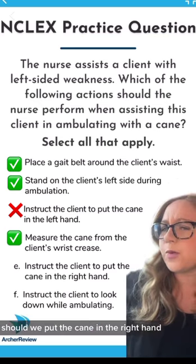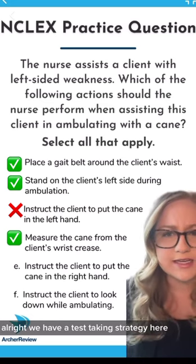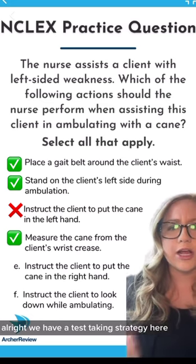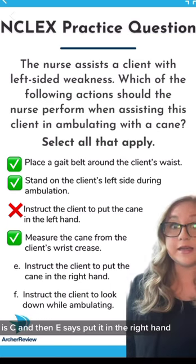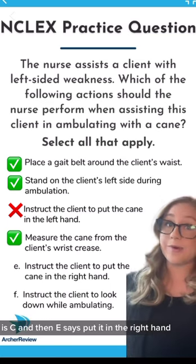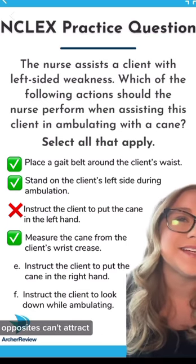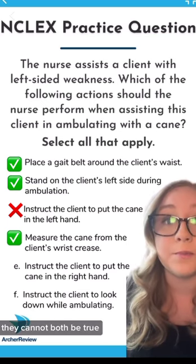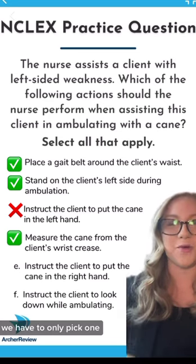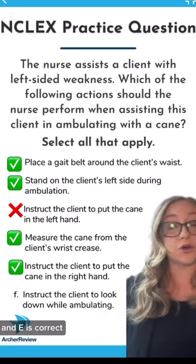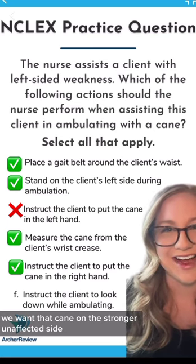E — true or false? Should we put the cane in the right hand? Here's a test-taking strategy: option C says instruct the client to put the cane in the left hand, and E says put it in the right hand. Those are opposites — and remember, opposites can't attract. They cannot both be true; we have to pick only one. And E is correct — we want that cane on the stronger, unaffected side.